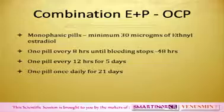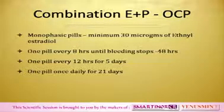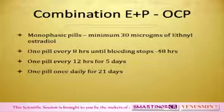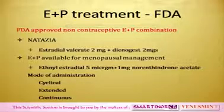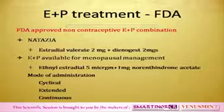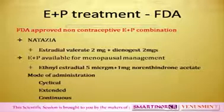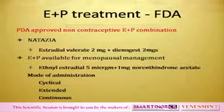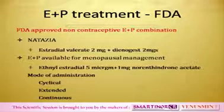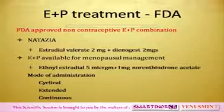Combination estrogen-progestogen — monophasic pills are much more useful as a practical tip. Which pill do you choose? It has to be a monophasic pill, given more frequently in the first day or two until bleeding comes down, then phased down to every 12 hours, then one pill a day once controlled. ENP can be given differently from regular oral contraceptive pills. The FDA recommends two other combinations not available in India: estradiol valerate with dienogest at a much lesser dosage, and ethinyl estradiol far lower than usual OCPs with norethindrone acetate — given cyclically, extended, or continuously.